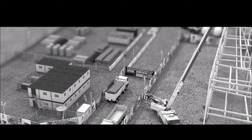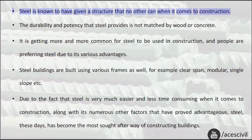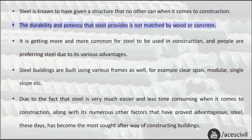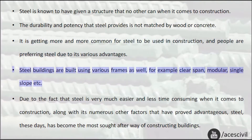In today's video we are going to discuss about three types of steel used in building construction. Steel is known to have given a structure that no other can when it comes to construction. The durability and potency that steel provides is not matched by wood or concrete. It is getting more and more common for steel to be used in construction, and people are preferring steel due to its various advantages. Steel buildings are built using various frames as well, for example clear span, modular, single slope etc.